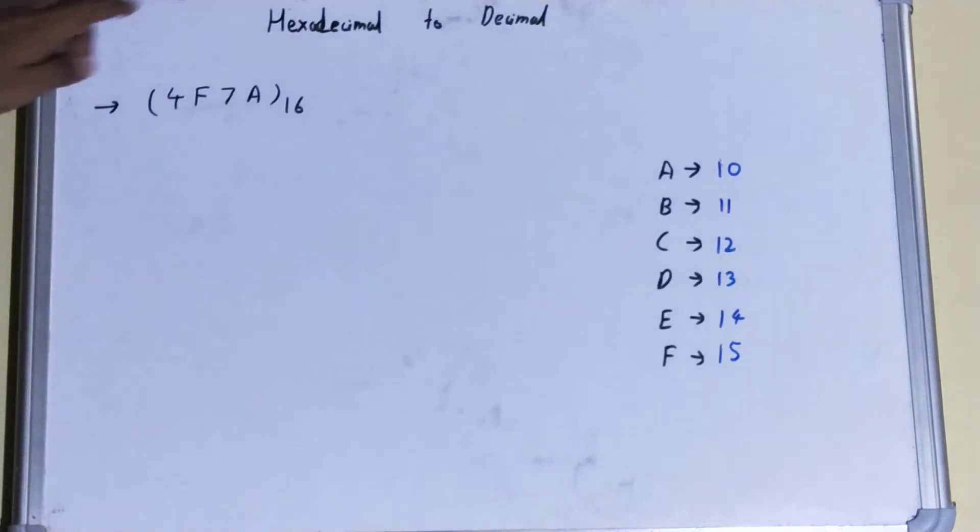Friends, in this video I'll be helping with how to convert a hexadecimal number to a decimal number. So let's start. If you talk about it, it is similar to your binary to decimal conversion, but here we multiply it by using 16 and not 2.